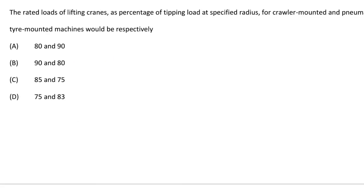Next question: the rated loads of lifting cranes as a percentage of tipping loads at specified radius, for crawler-mounted and pneumatic tire-mounted machines would be respectively — option A 80 and 90, option B 90 and 80, option C 85 and 75, option D 75 and 83. The correct answer is option D, 75 and 83.